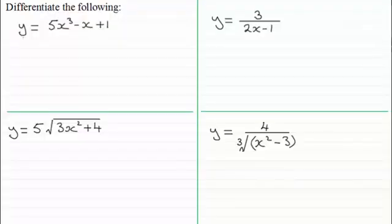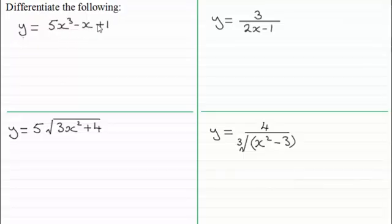Hi. You should already be familiar with differentiating, say, y equals 5x cubed minus x plus 1. If you watched the earlier tutorials, it turns out to be 15x squared minus 1. The constant, remember, goes to 0. So if you're unfamiliar with that, do go back and check the earlier tutorials.